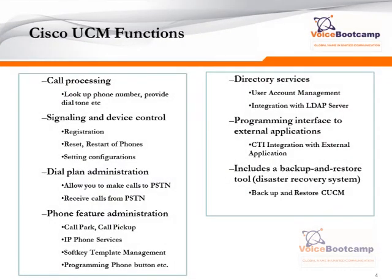Some of the main functionality of Cisco CUCM is call processing. Call processing involves looking up the phone number, providing a dial tone, establishing the call, and terminating the call. Then you have signaling and device control, which is responsible for registering devices.